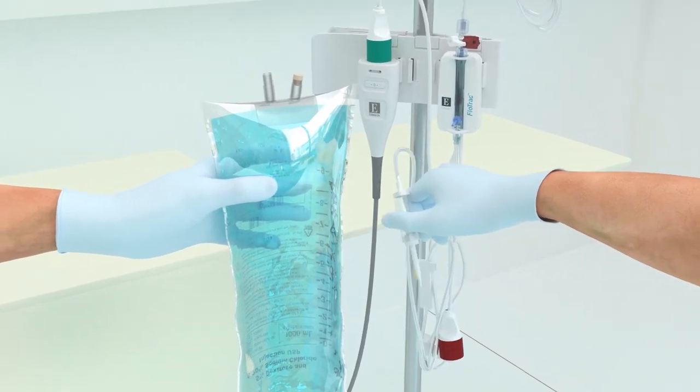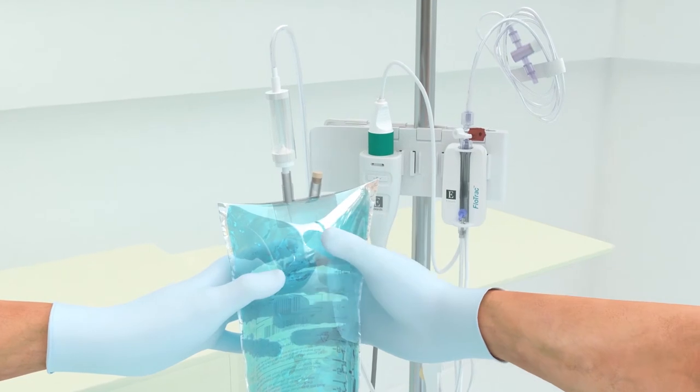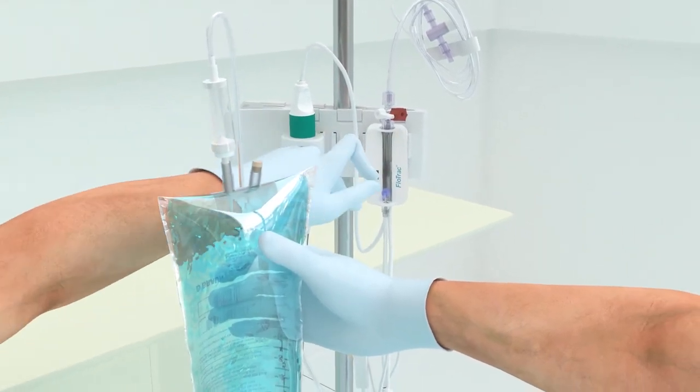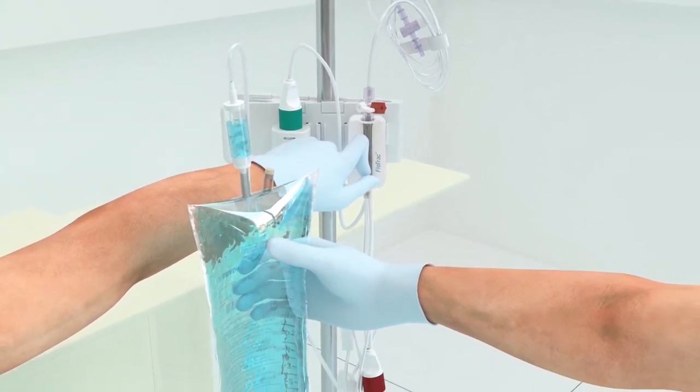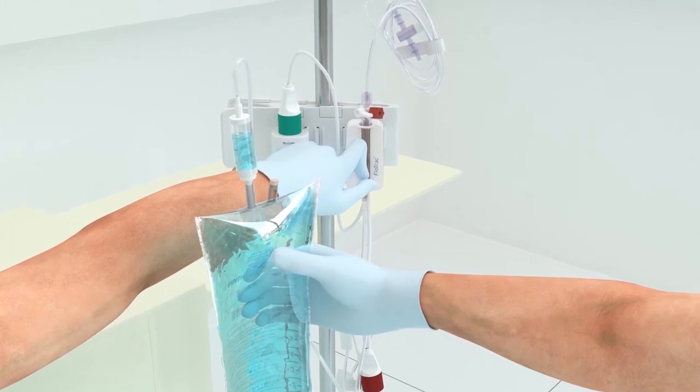Gently squeeze all the air out of the bag with one hand while pulling the flush tab with the other hand until all the air is emptied and the drip chamber is halfway filled. If air is not removed from the bag, air may be forced into the patient's vascular system when the solution is exhausted.